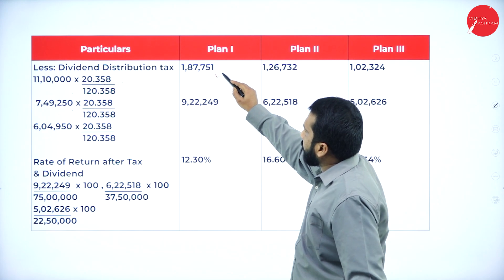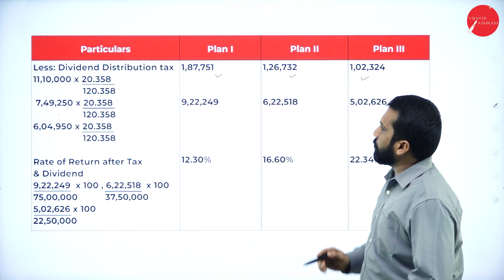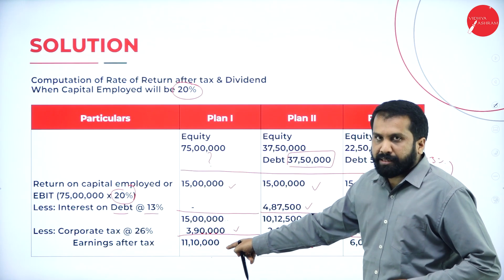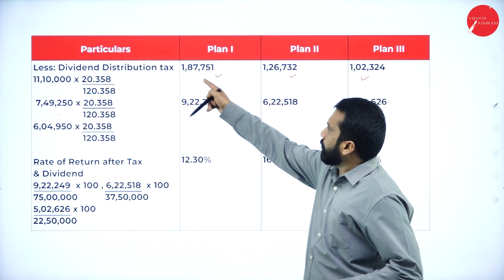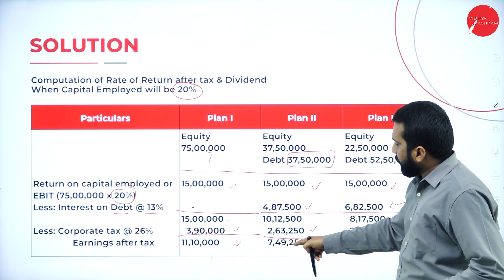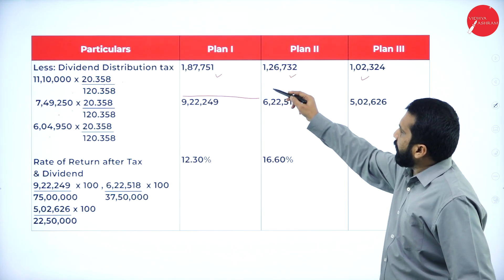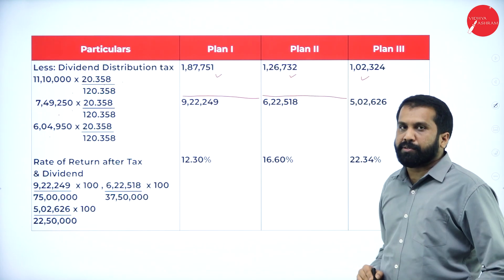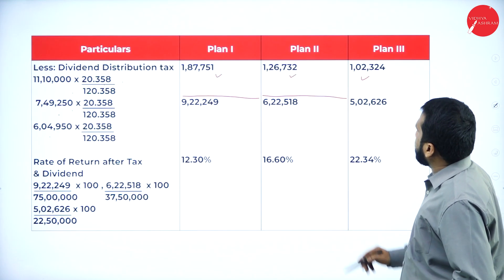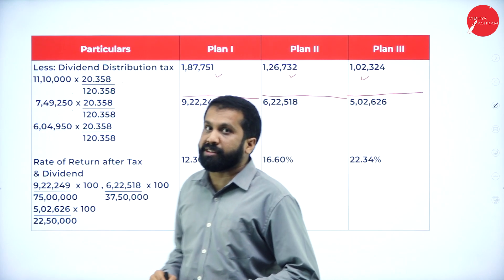After applying the formula, you will get approximately 1,87,000; 1,26,000; and 1,02,000 as dividend distribution tax. Then subtract these: 11,10,000 minus 1,08,000; 7,49,000 minus 1,26,000; and 6,04,000 minus 1,02,000. Your answers are approximately 10,02,000; 6,23,000; and 5,02,625.